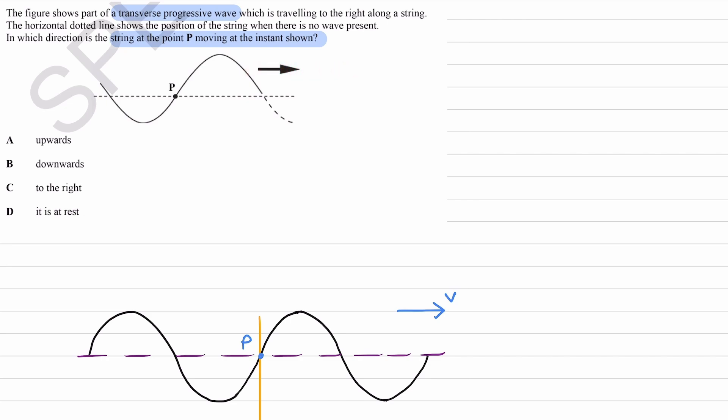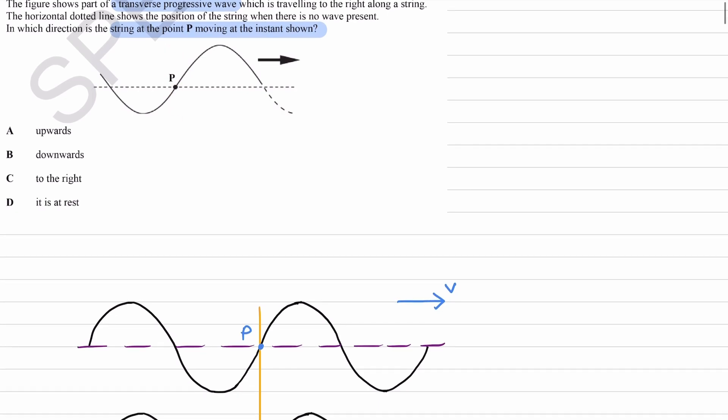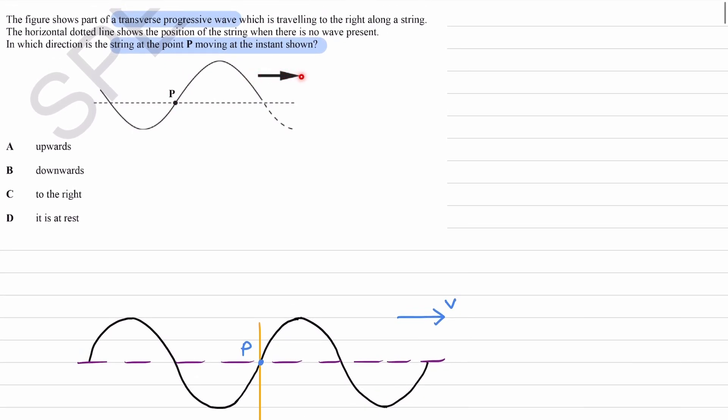For a transverse wave, the particles along that wave will oscillate perpendicularly to the direction of energy transfer or wave propagation. And P must also stay along this wave shape, so as this wave shape moves towards the right, P will follow along with it.